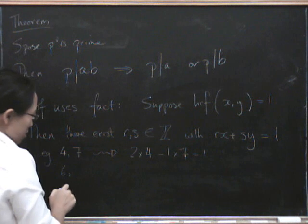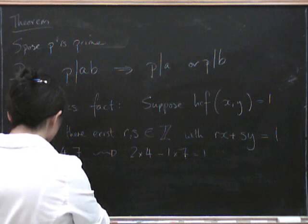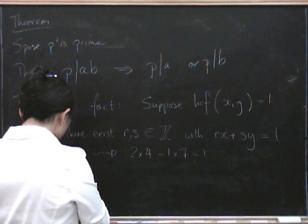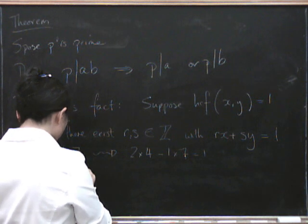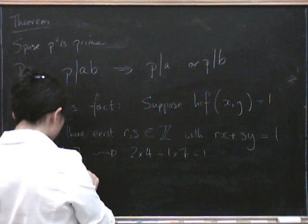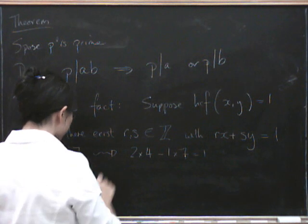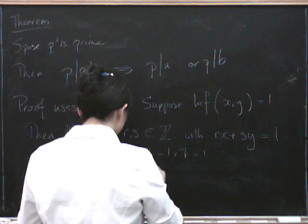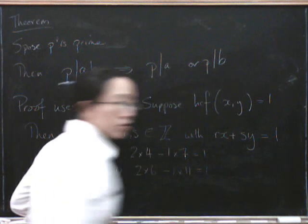Let's do 6 and 11. Well, that was too easy as well, because we can do 2 times 6 minus 1 times 11 equals 1.